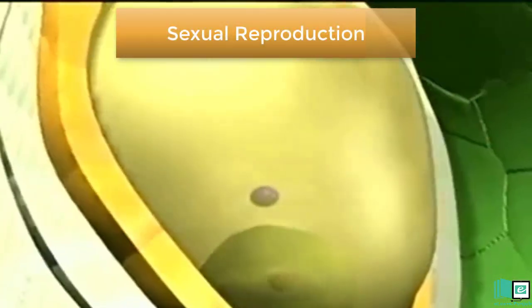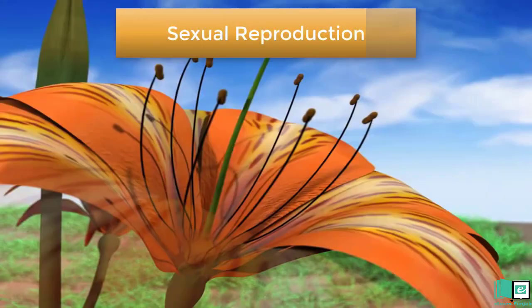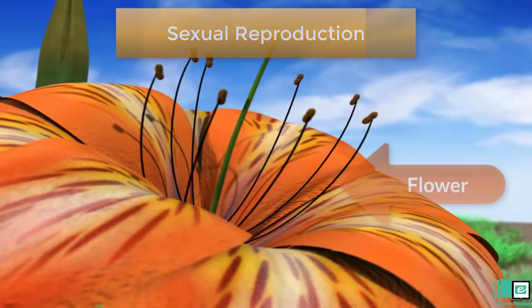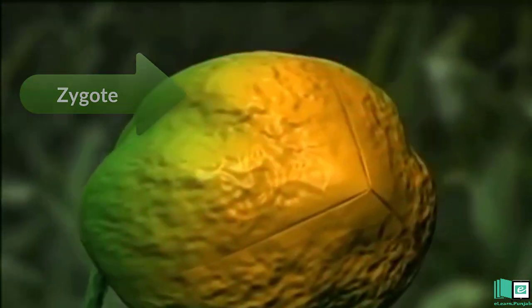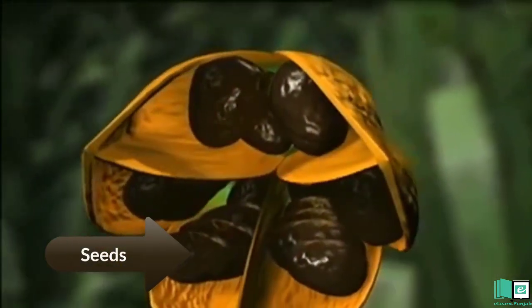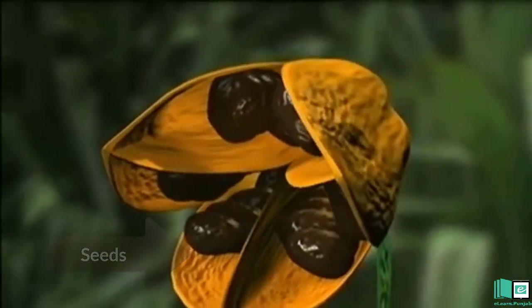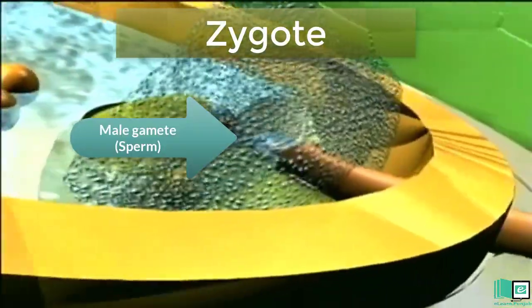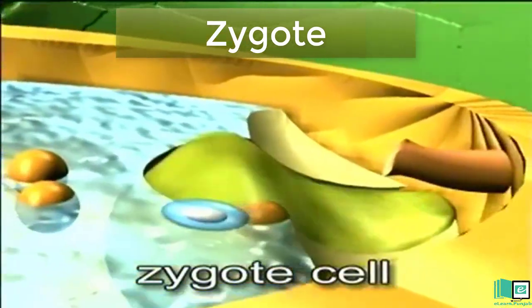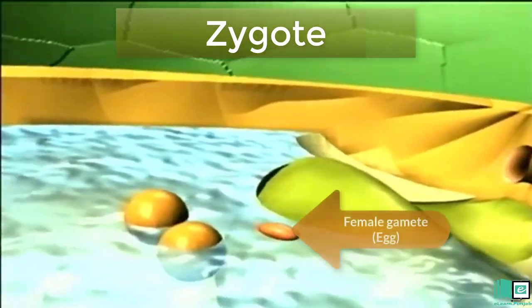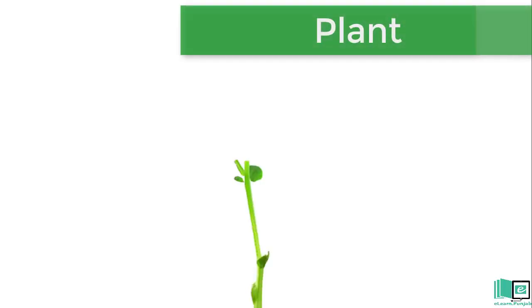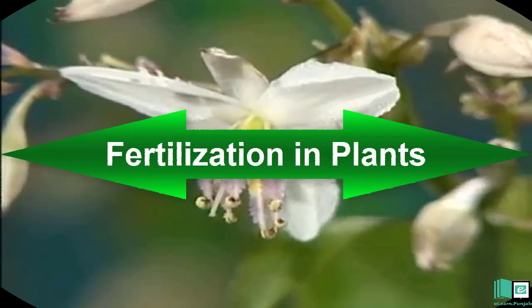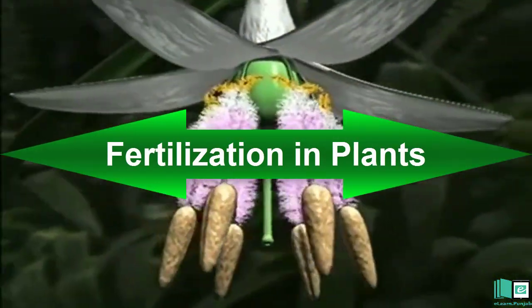Flowers are responsible in plants for sexual reproduction. The zygote formed in this process transforms into a seed. A male gamete, sperm, and a female gamete, egg, fuse to form a zygote. Later, the zygote develops into a seed and the seed grows into a new plant.